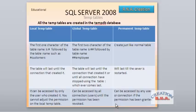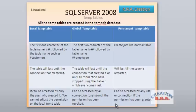The local temp table can be accessed only by the user who created it — you cannot adjust the permission on the local temp table. The global temp table can be accessed by all connected users until the permission has been revoked. If I don't want some users to have access, I can ask the system administrator, or I can myself revoke the permission for that table for any other user. The permanent temp table can be accessed by any user or connection if the permission has been granted — you have to give permission for that table, otherwise other users cannot access it.